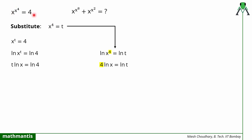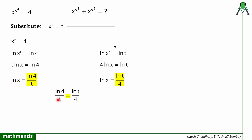Simplifying is very important here. From the two equations we have: ln x equals ln 4 divided by t, and ln x equals ln t divided by 4. Since both expressions equal ln x, we can equate them: ln 4 divided by t equals ln t divided by 4. Now we can compare both sides and see that the value of t must be 4, since that makes the numerator and denominator equal on both sides.